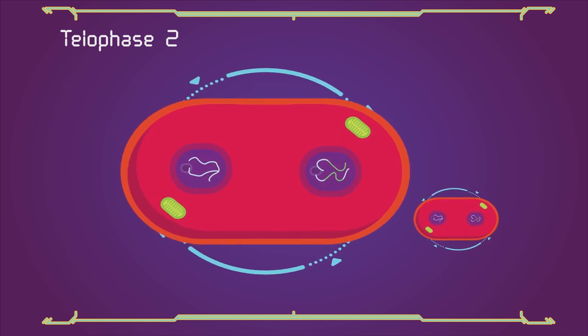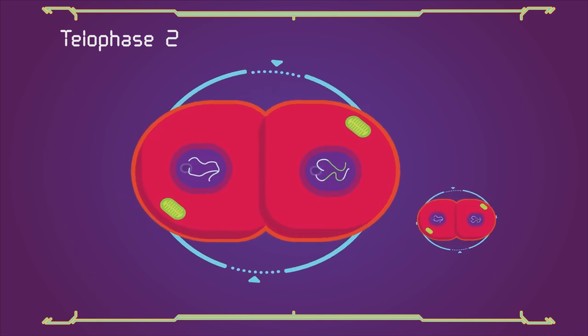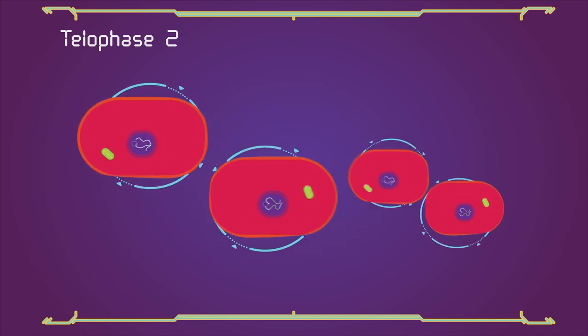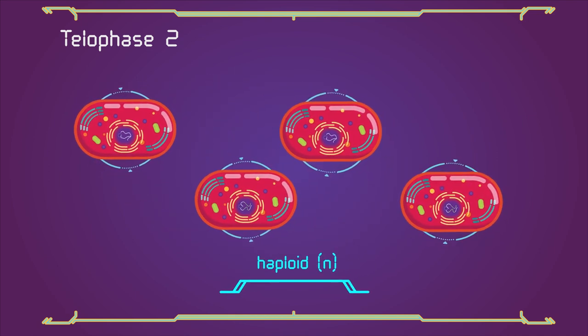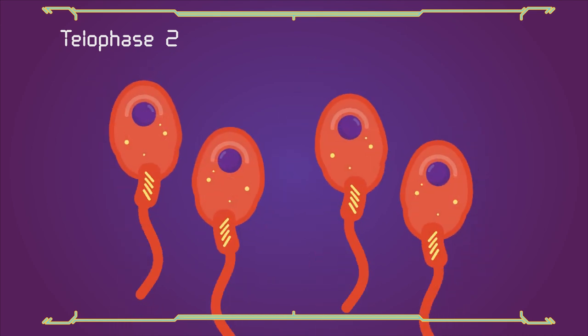Nuclear envelopes reform and cleavage or cell plate formation eventually produces a total of four daughter cells, each with a haploid set of chromosomes. Meiosis is now complete and ends up with four new daughter cells.